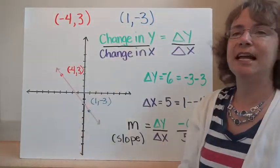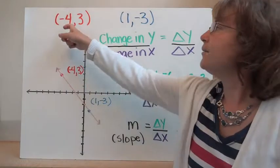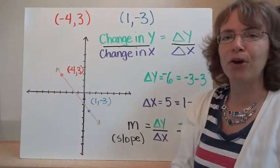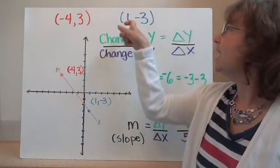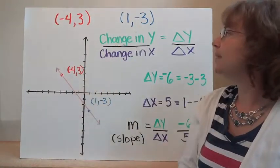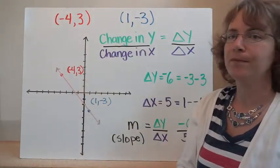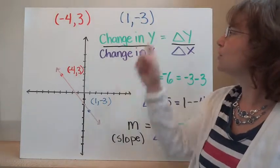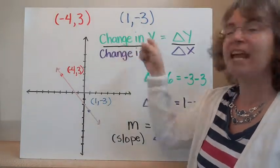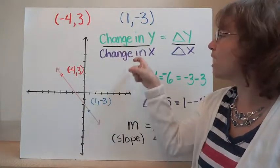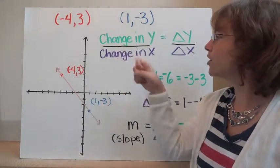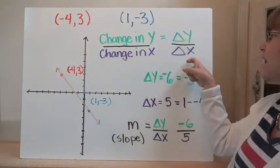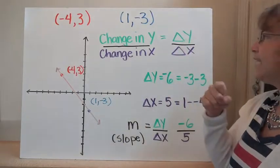Let's look at another example. Say we have the coordinate points negative four comma three and one comma negative three. We want to find the slope, so we're going to look at the change in y over the change in x, or delta y over delta x.